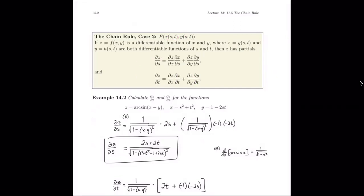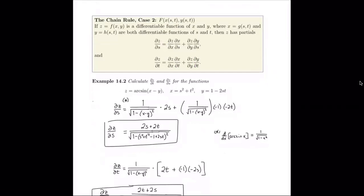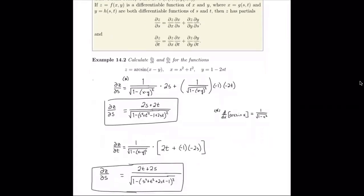Now we have a problem asking us to find both dz/dt and dz/ds for z equals arc sine of (x − y), where x equals s² + t² and y equals 1 − 2st. In this example, I've chosen to write everything in terms of s and t, though that's not necessary — we can leave answers mixed with x, y variables by convention. Definitely read what any problem requires in terms of the form of your answer.